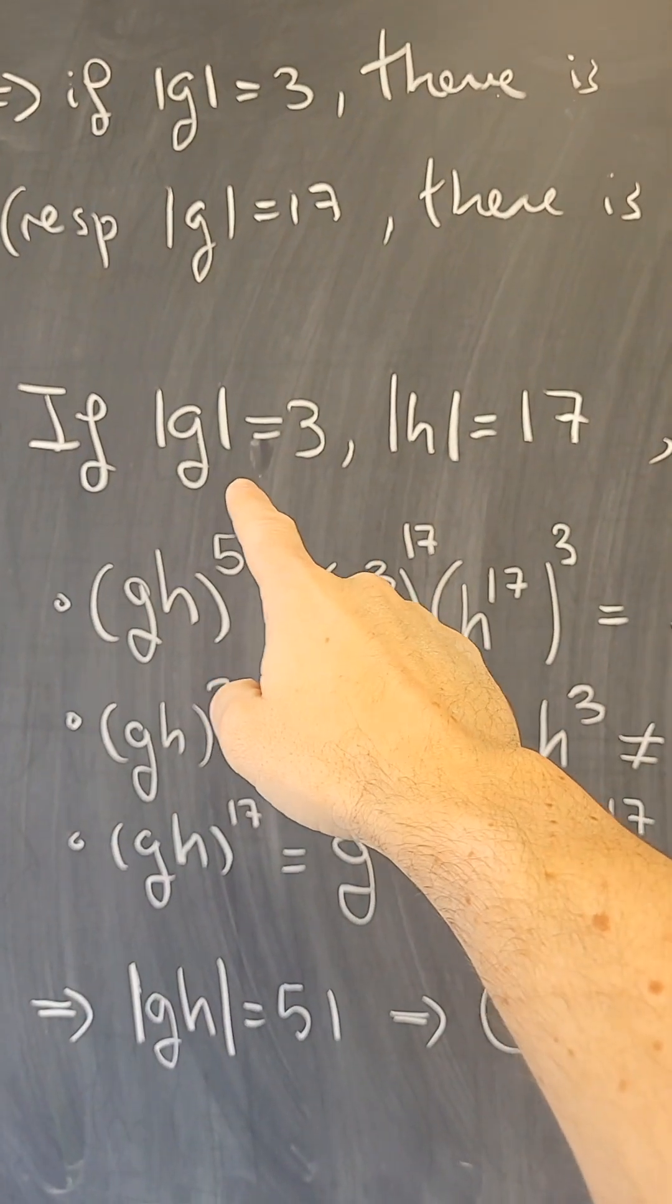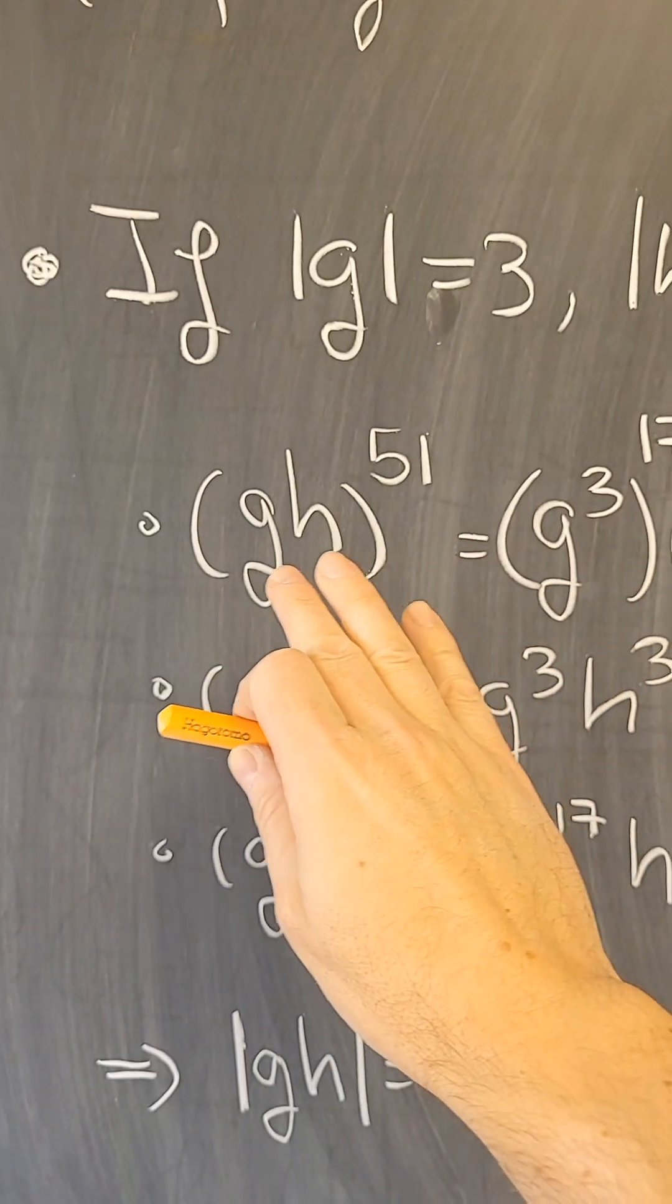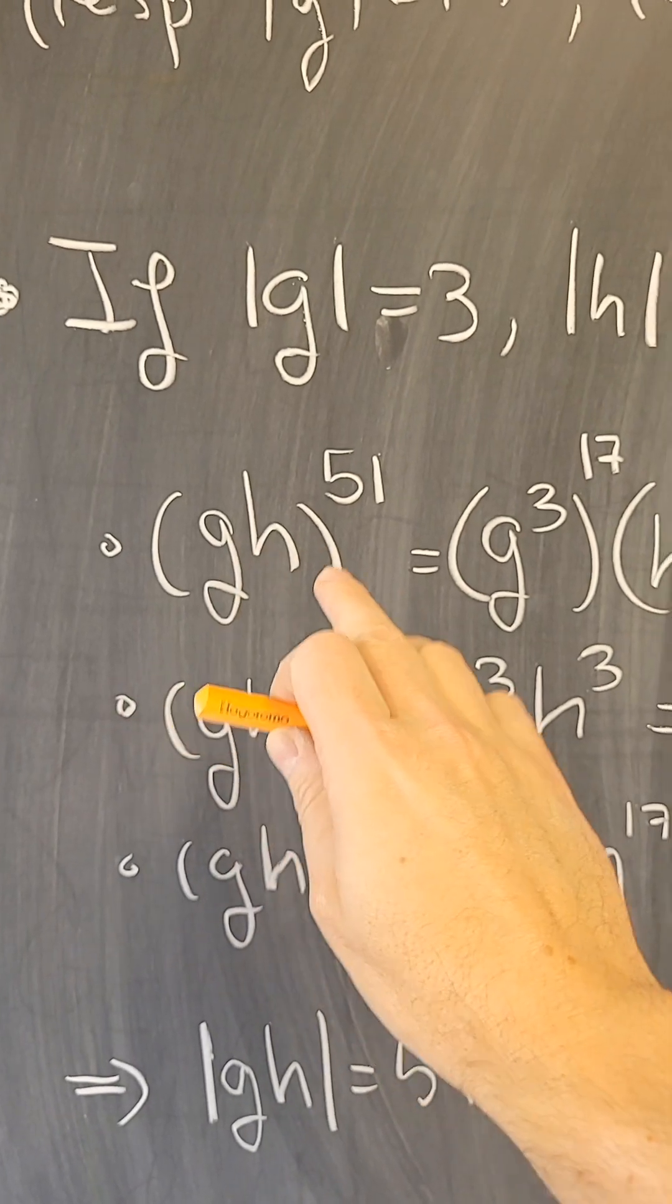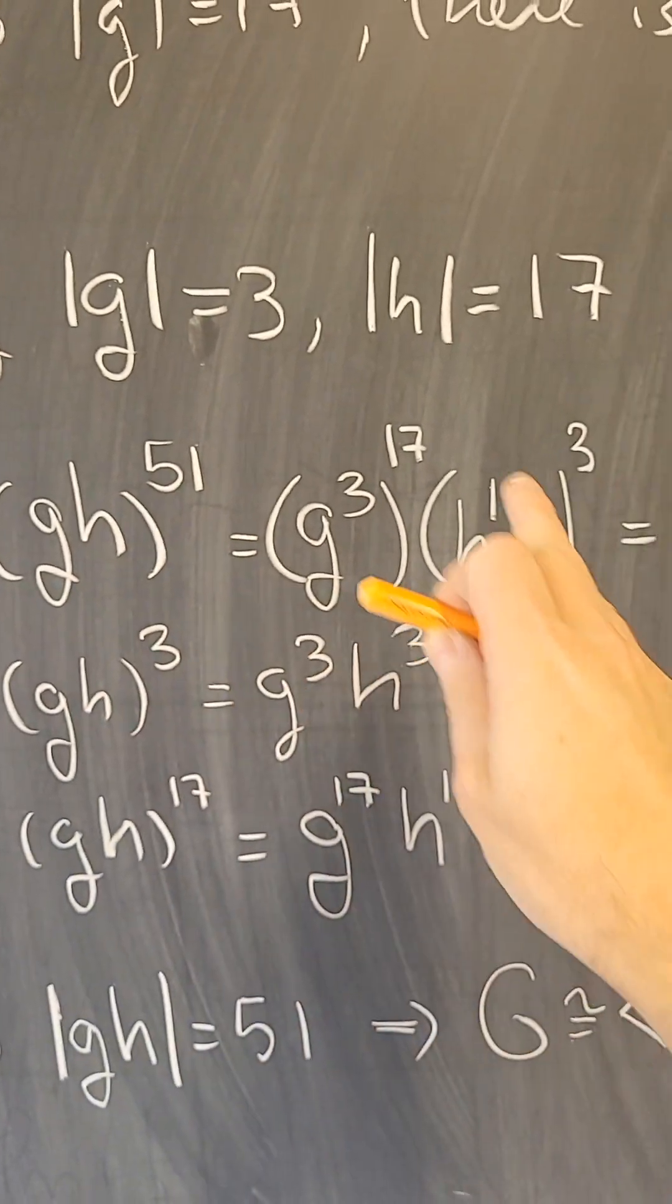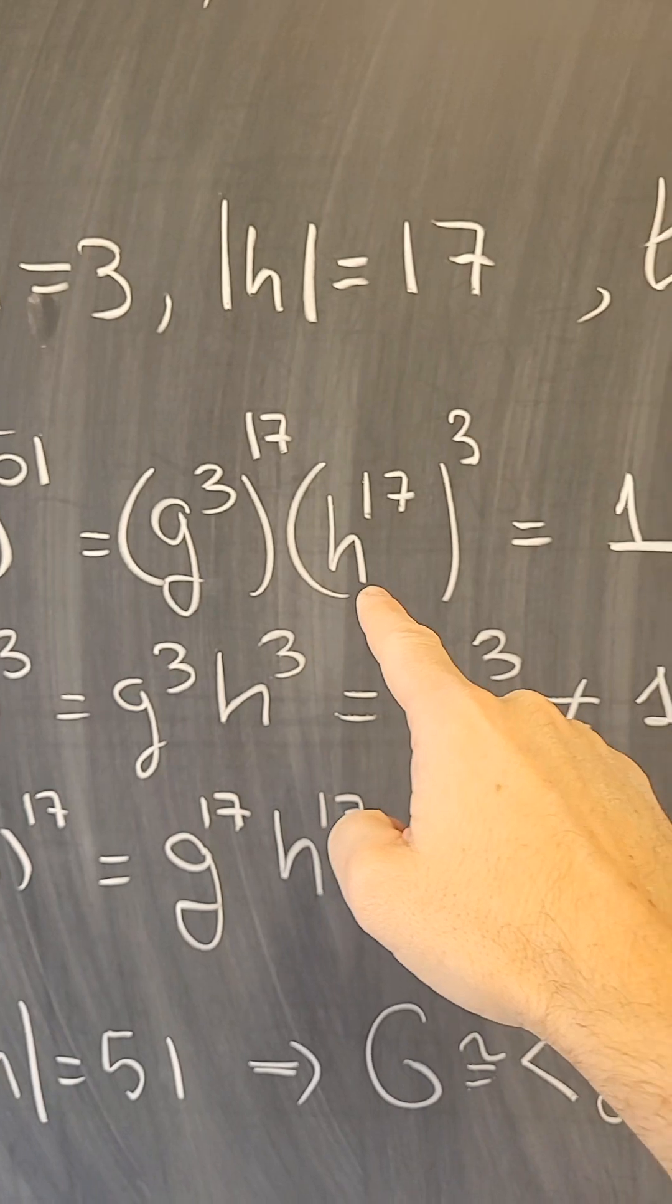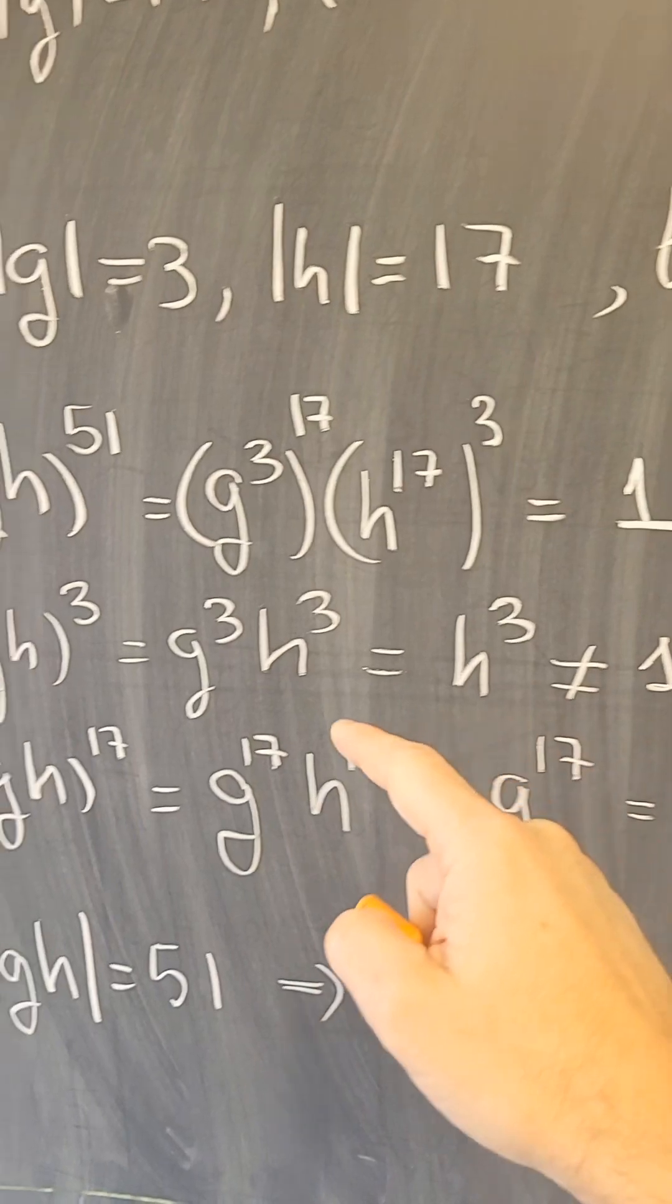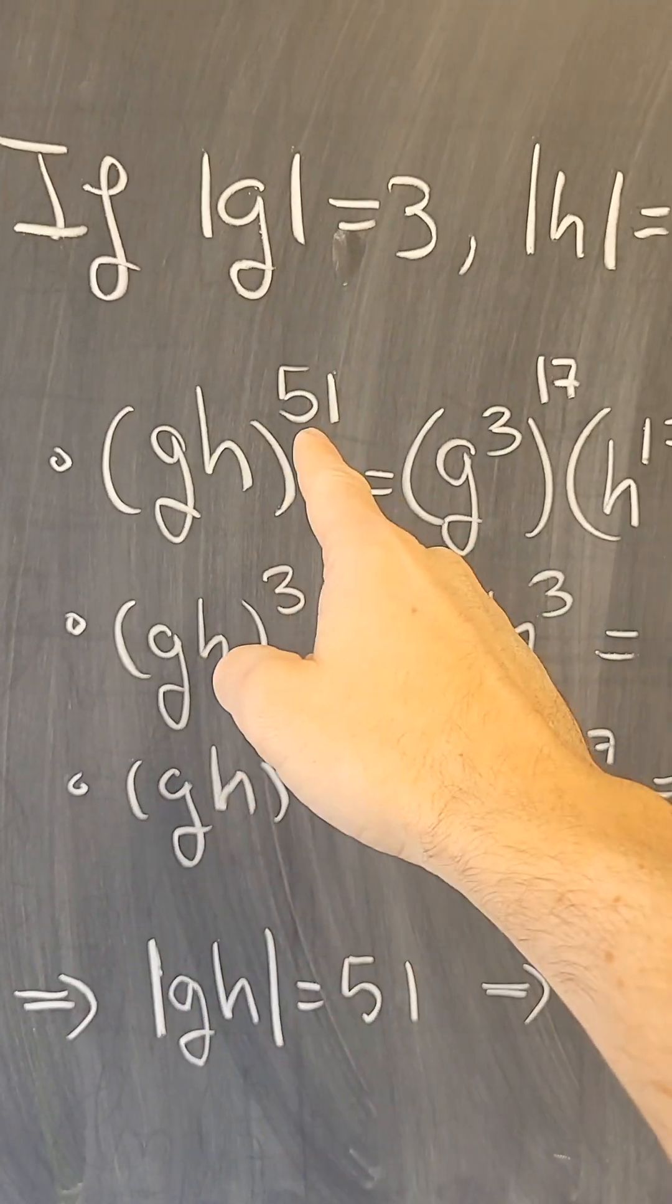So what happens if the order of g is 3 and h has order 17? Then we can look at g times h. g times h to the 51st power has this expression by the laws of exponents, but g to the 3 is 1 and h to 17 is 1, so this is the identity.